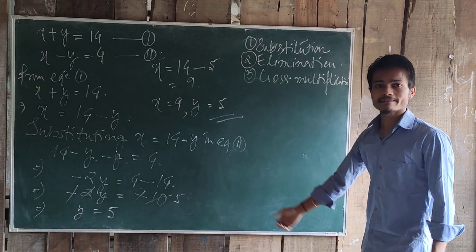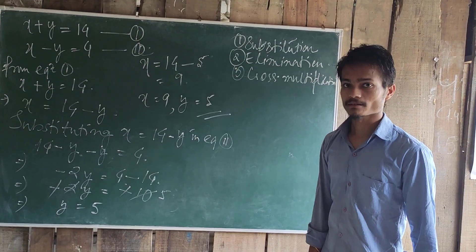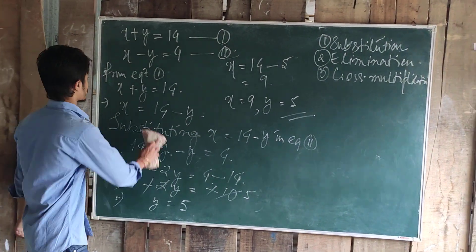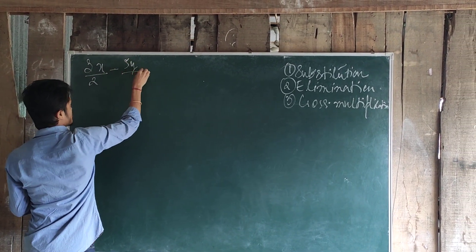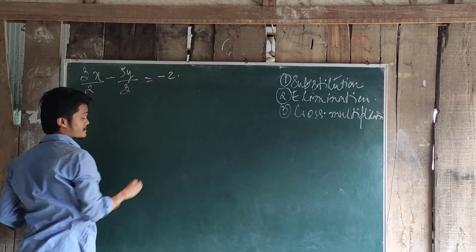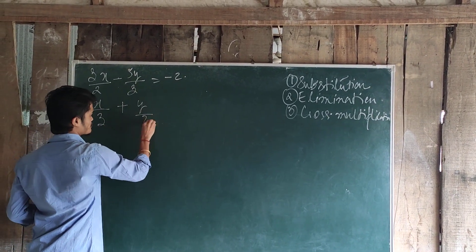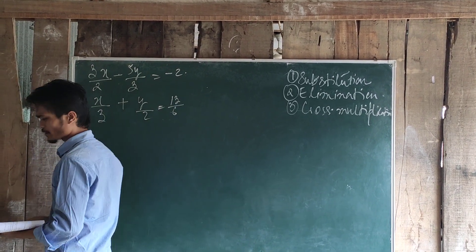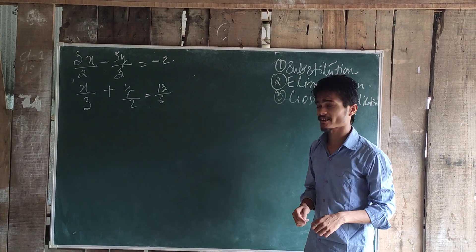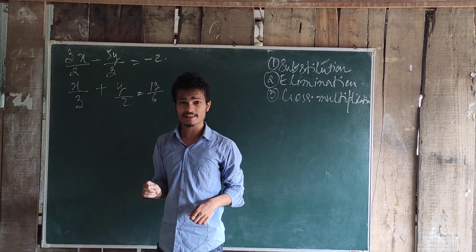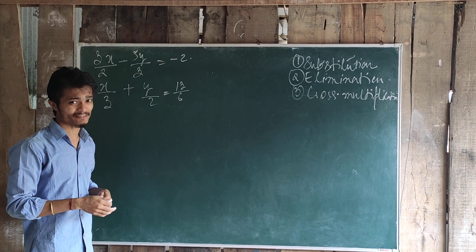To better understand, let us do one more example with the substitution method. See: 3x by 2 minus y by 3 is equal to minus 2. And another equation: x by 3 plus y by 2 is equal to 13 by 6. These two are the equations given. Now in this sum, these two pairs of linear equations are in fractions — the coefficients of the variables are in fractions. So what we are going to do is reconstruct our given equations.